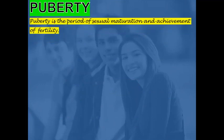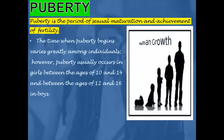Puberty is the stage at which a sexually immature boy or girl becomes sexually mature and is capable of reproduction. Puberty is the period of sexual maturation and achievement of fertility by boys and girls. The time when puberty begins varies greatly among individuals. However, puberty usually occurs in girls between the age of 10 and 14, and between the ages of 12 and 16 in boys.